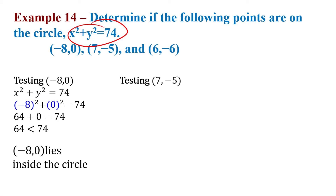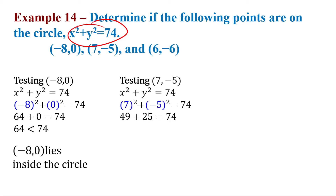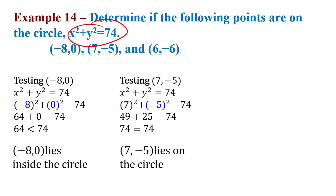For 7 comma negative 5, let's substitute 7 and negative 5 to x and y. 7 squared is 49, negative 5 squared is 25. 49 plus 25 gives us 74. Since 74 is equal to 74, this point lies on the circle.